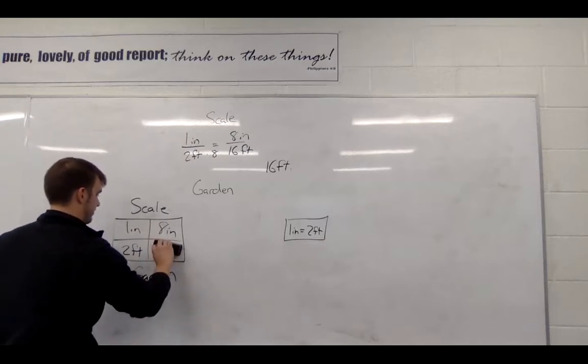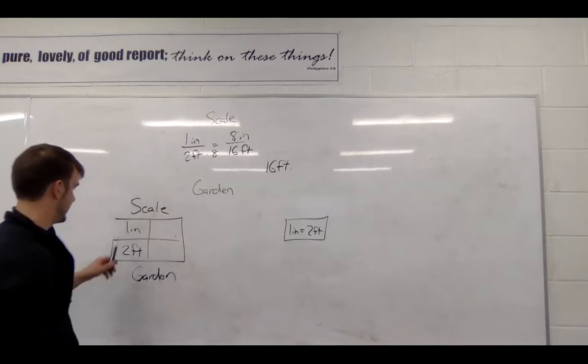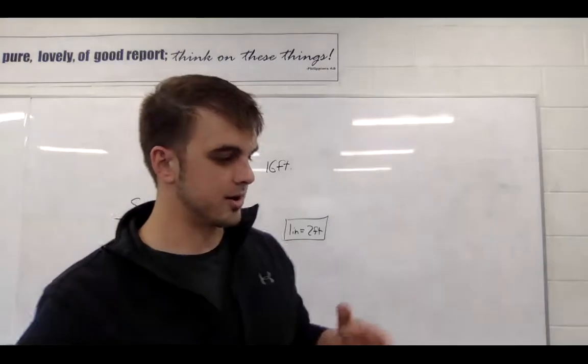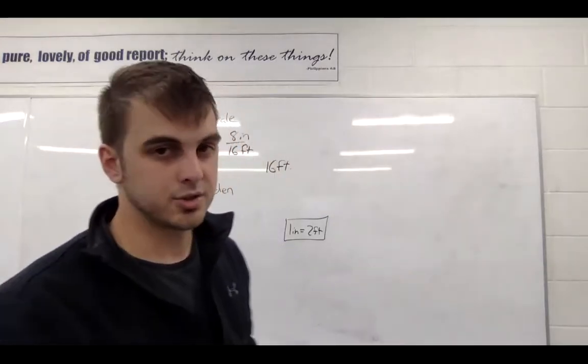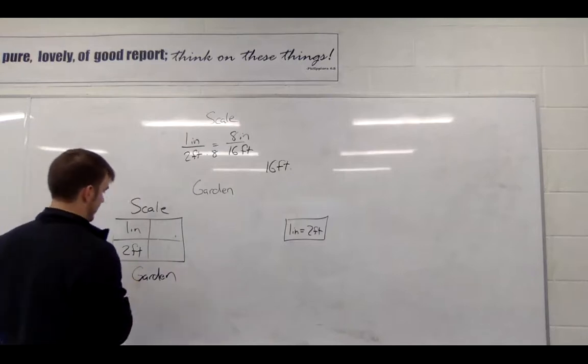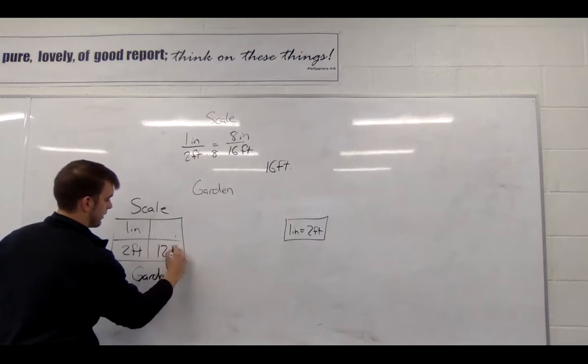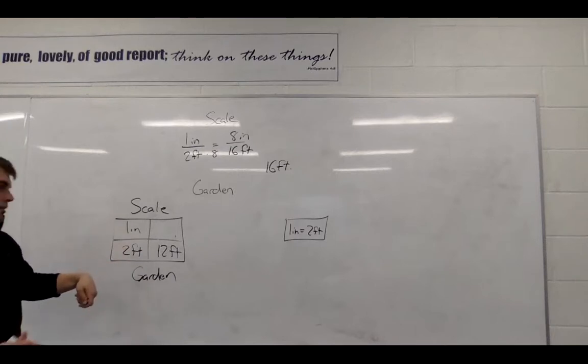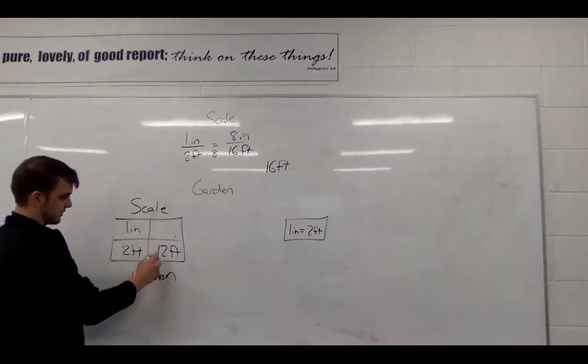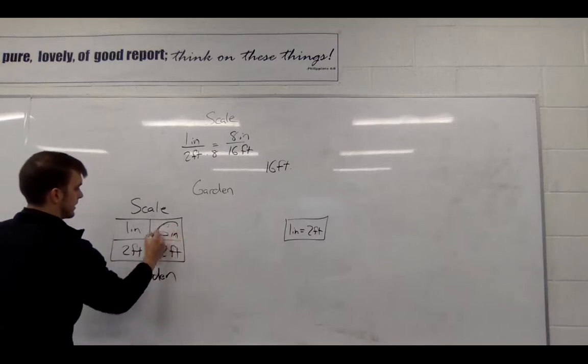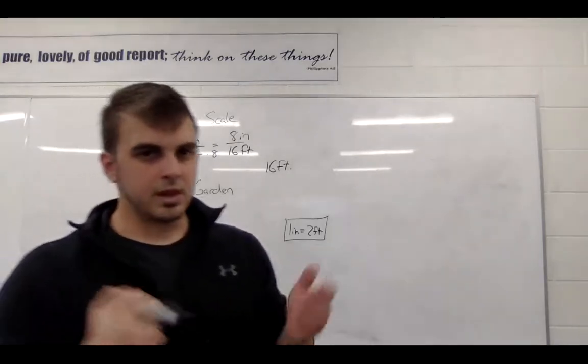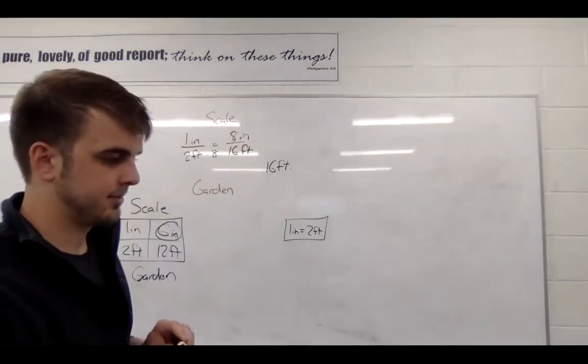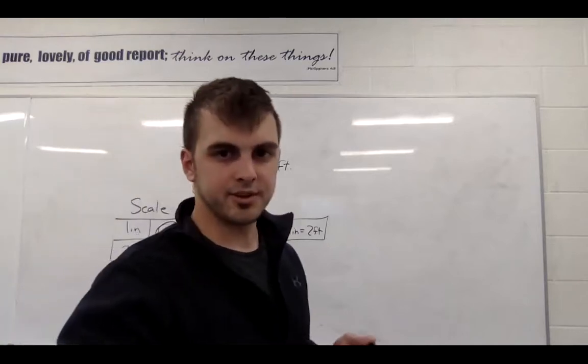Now, the second part of the problem is, there's a question B there, and so that scale stays. It says, if Mary's garden is to be 12 feet wide, how wide should the drawing be? So, if she wants her garden to be 12 feet wide, right here, this is the garden information that we have now, 12 feet. So, one over two is equal to what over 12, so how many inches? Well, one inch equals two feet, two inches is four feet, three inches is six feet, you can go up through, or you can just figure out, one over two is equal to six over 12, so her answer would be six inches for that.